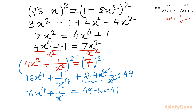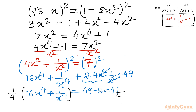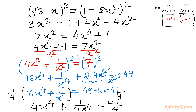Now I will divide this equation by 4 to match our required expression. Dividing both sides by 4 gives 4x to the power 4 plus 1 over 4x to the power 4 equal to 41 over 4. That means our final answer for the evaluation of the expression is equal to 41 over 4.